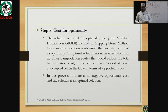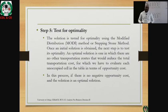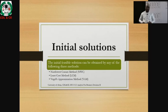Degeneracy simply means a situation where the number of shipping routes is less than the rim condition, that is row plus column minus one. If the number of shipping routes is not in tandem with that, degeneracy has occurred. We resolve degeneracy by introducing a fake quantity titled epsilon into that route in order to complete the cell. Then in step five, we test for optimality, which we shall cover in the next sub-module.